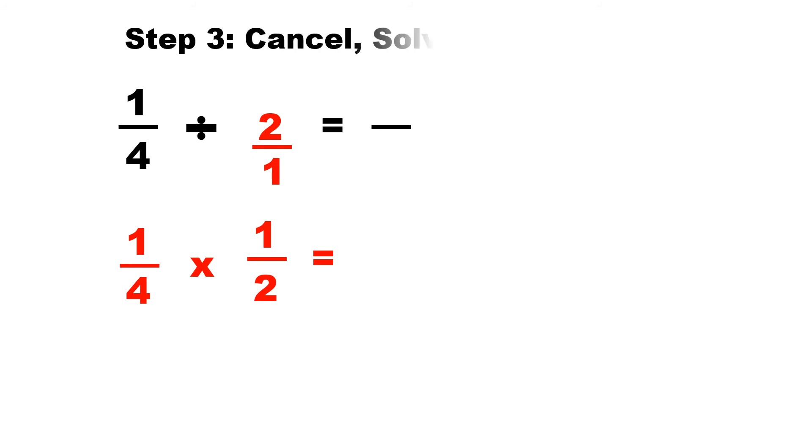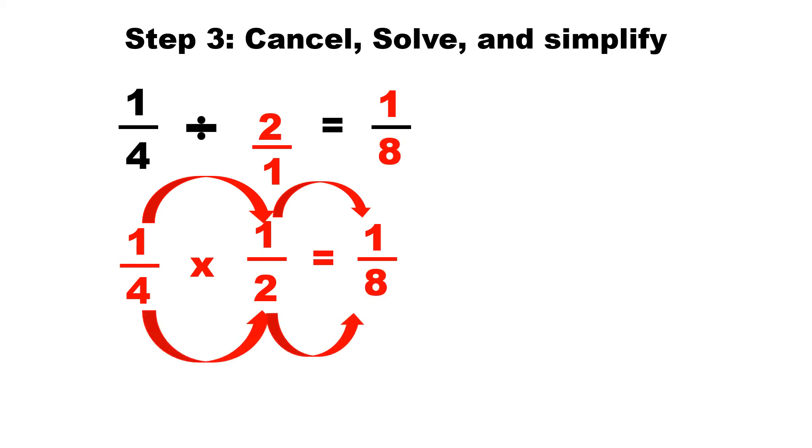And step three is we cancel, if there's any cancellations, we solve and we simplify. So let's do the numerators. 1 times 1 will be 1. 4 times 2 will be 8. 1/8 is the answer.